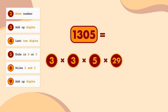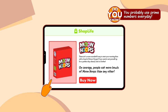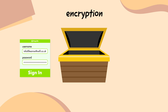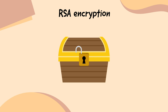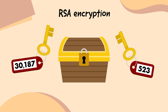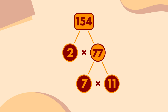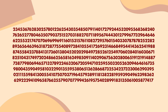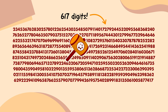Did you know that you probably use prime numbers every single day without even realizing? Prime numbers are used all over the world in something called encryption, which is used to keep digital information safe and secure. In one type of encryption called RSA, composite numbers are used as padlocks to lock up your data. The only way to unlock them is to use the padlock's keys — the composite number's prime factors. Working with small numbers like 12, 35, 268, and 1305 was easy, but what about this monster of a number? It's 617 digits long! If a computer had to find the prime factors of this number, it would take thousands of years — so your digital information can stay nice and secure.